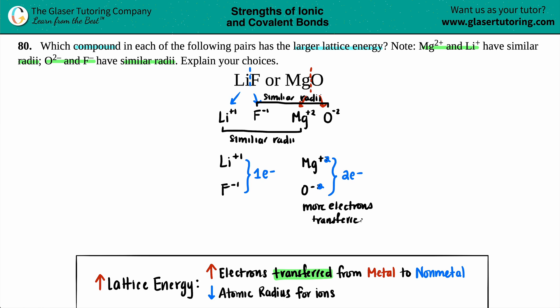And because of that, we're going by the charges. We know that MgO would have the larger lattice energy because the more electrons that are being transferred, the closer the bond, the more attraction that you got. Two is better than one as far as electrons being transferred.